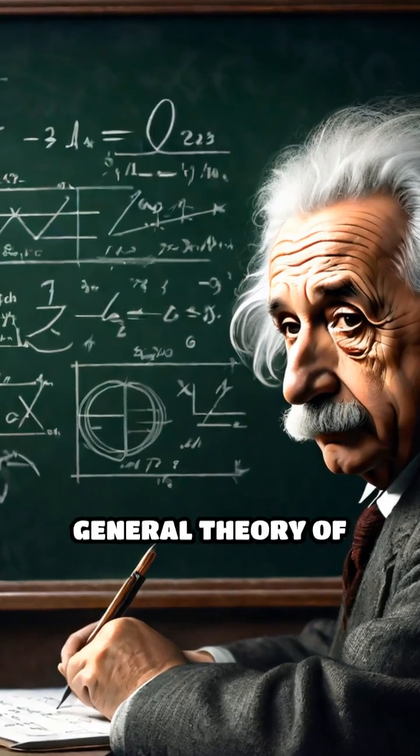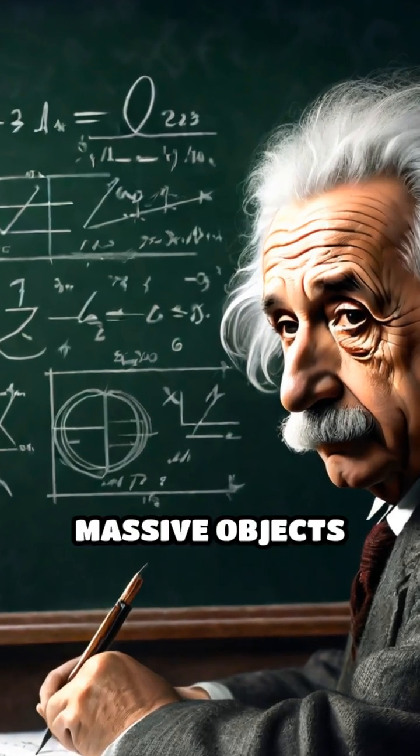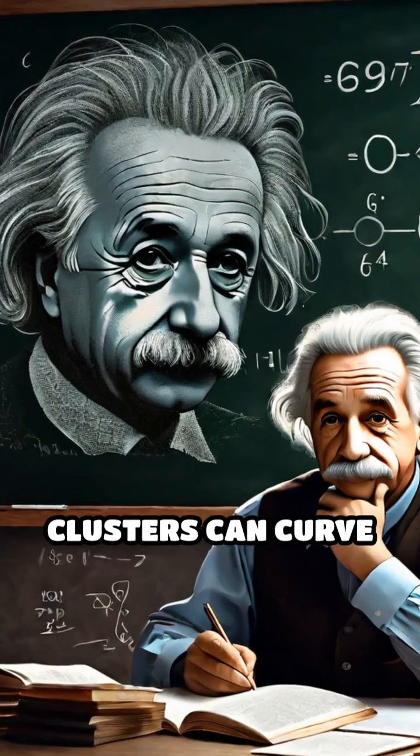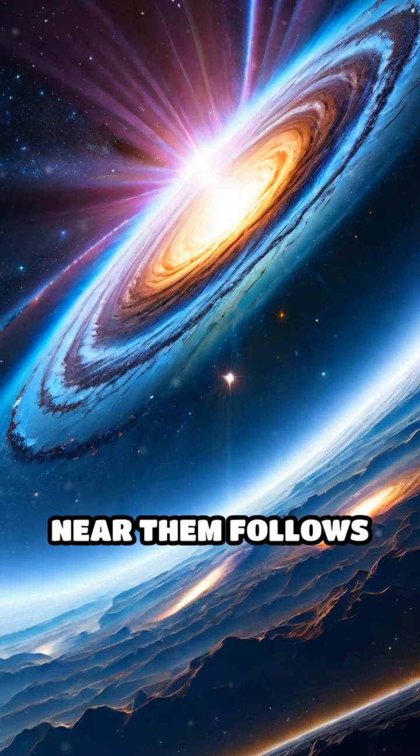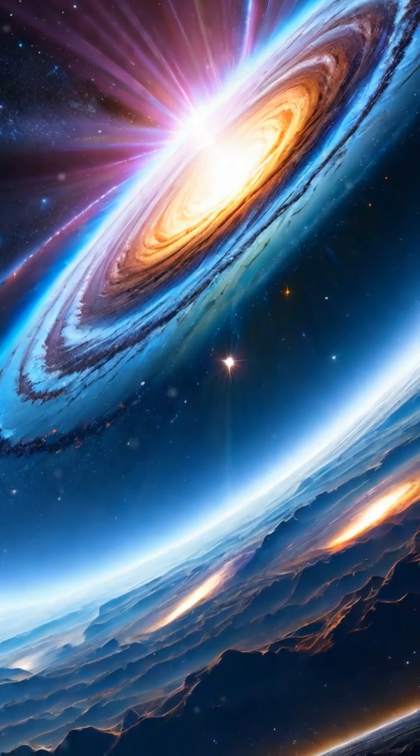According to Einstein's general theory of relativity, massive objects like galaxies or clusters can curve the fabric of space, and light traveling near them follows this warped route. The result?